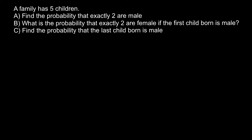Hello and welcome to Nikola's genetics lessons. Today's question is: a family has five children, and there are three questions. Question A: find the probability that exactly two are male. Imagine that each empty box stands for whether a child can be a boy or a girl — the first, second, third, fourth, and fifth child.